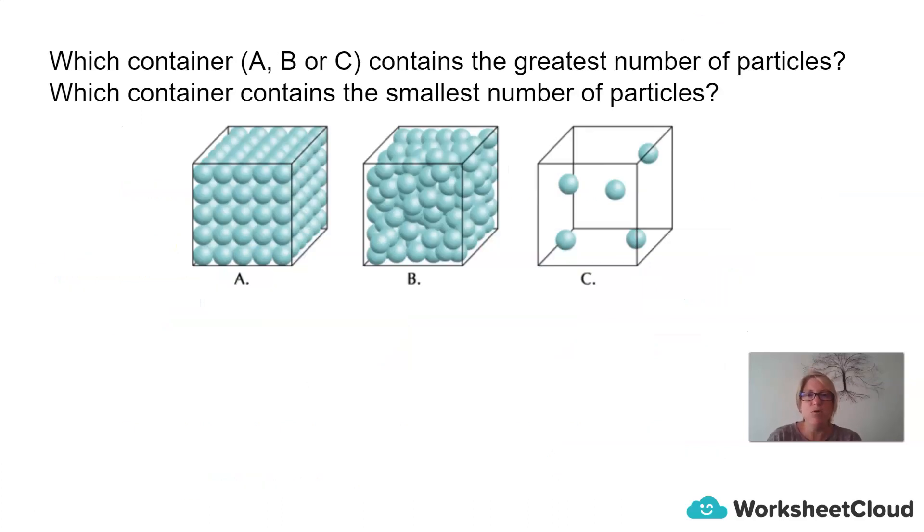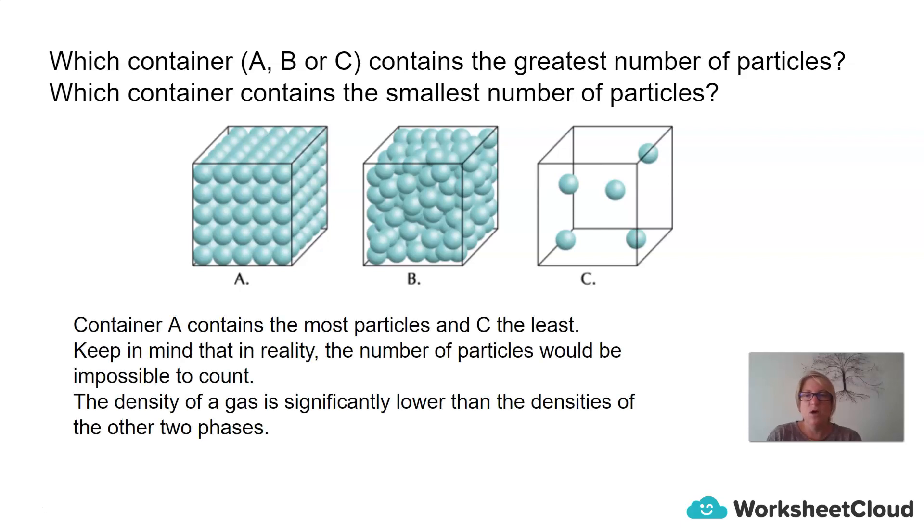So which container, A, B, or C, contains the greatest number of particles? And which container contains the smallest number of particles? Container A contains the most particles and C the least. Keep in mind, however, that in reality, the number of particles would be impossible to count. We cannot see these number of particles with the naked eye. We are looking at this at a submicroscopic level. So we are imagining what the particles look like.